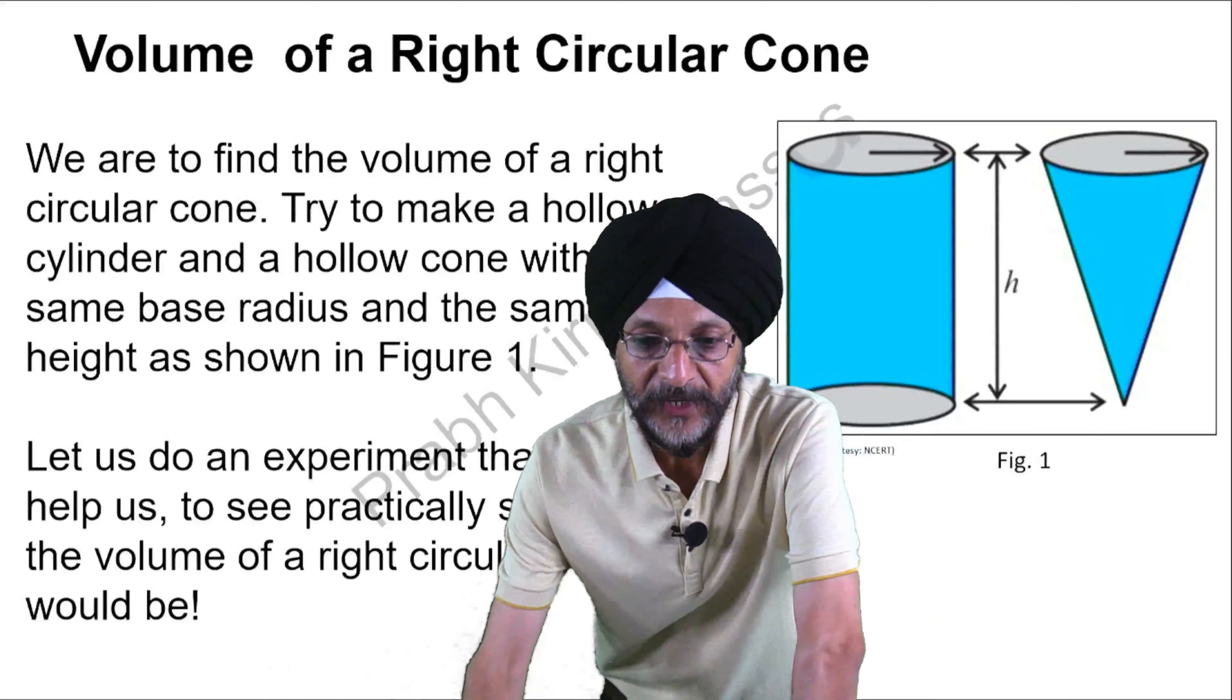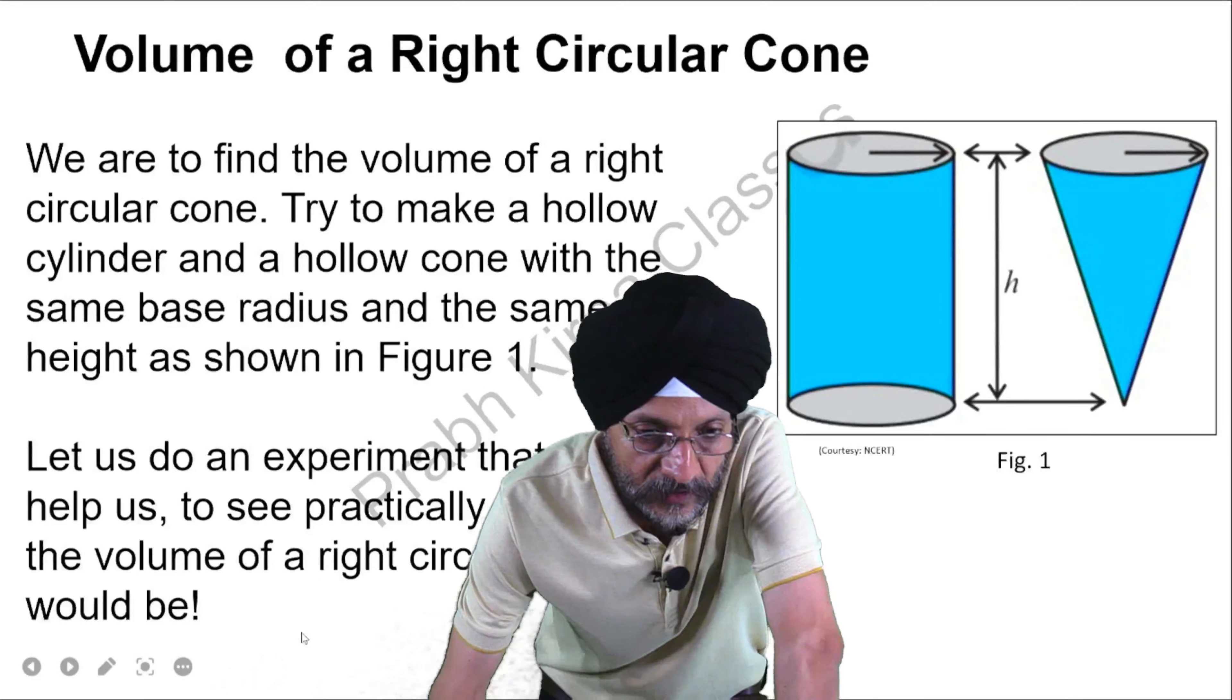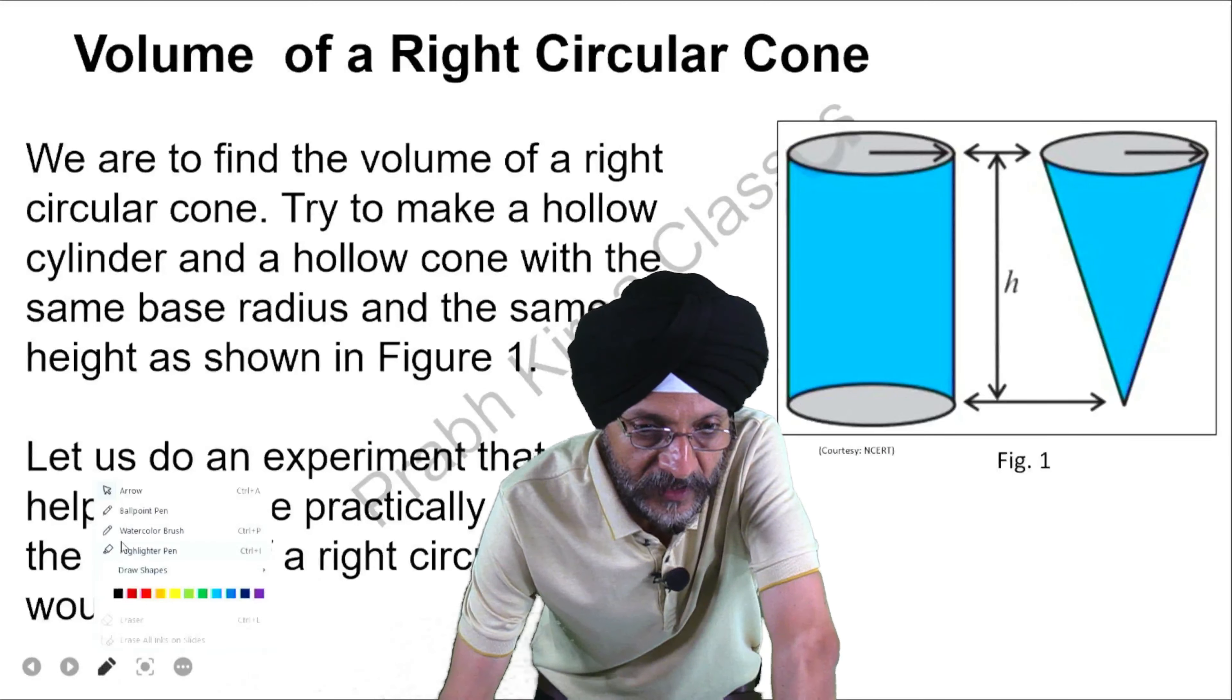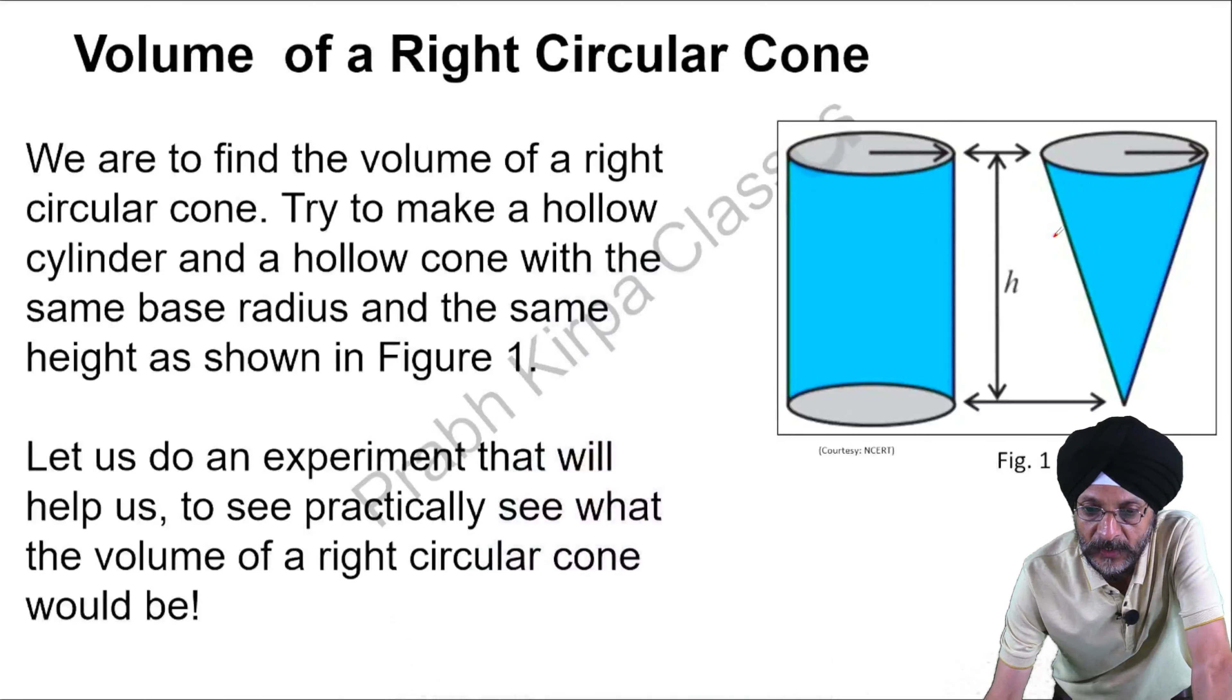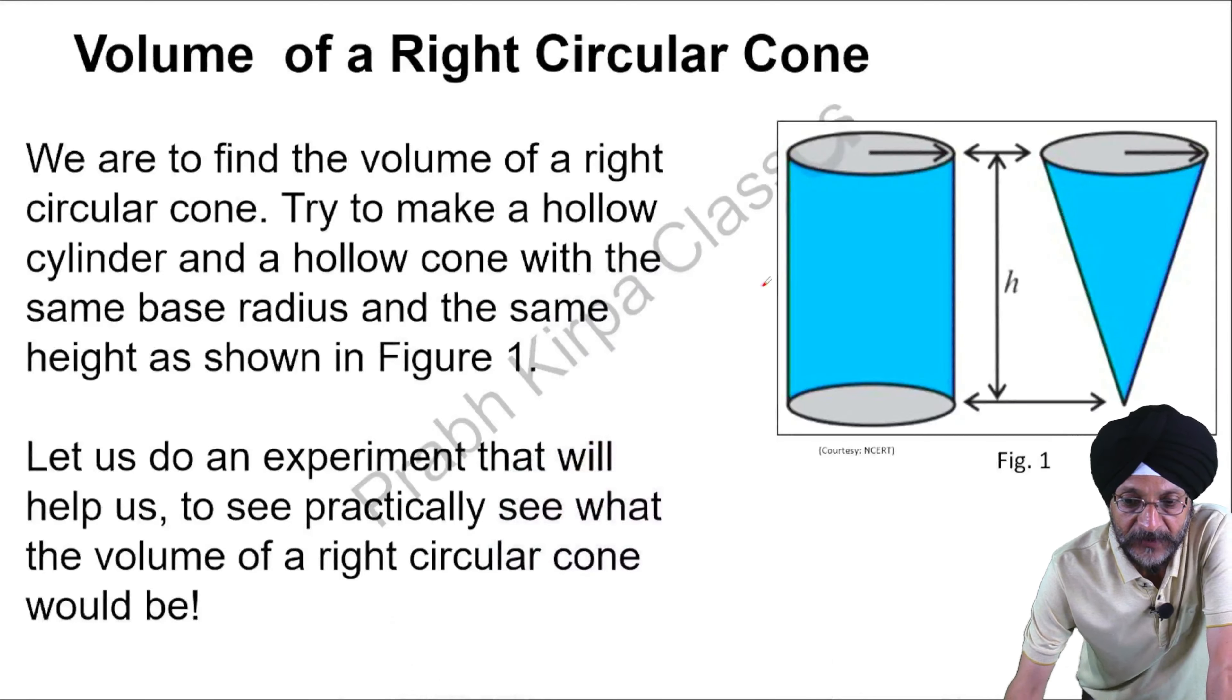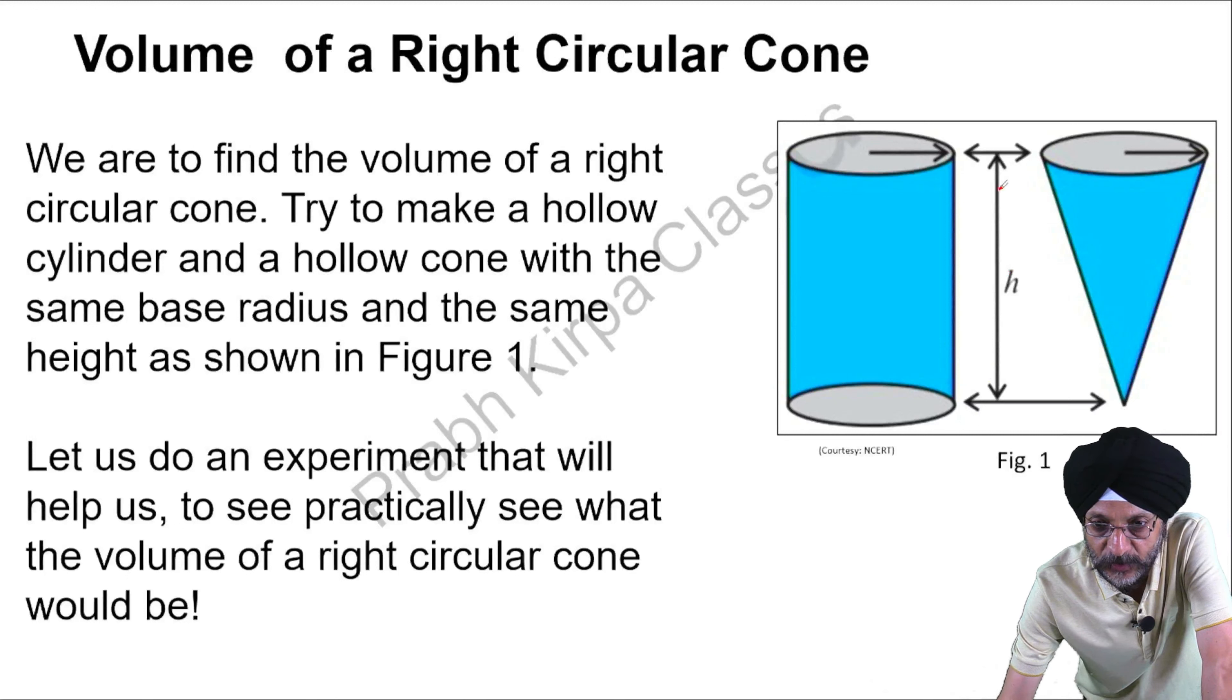For that purpose, we make a hollow cylinder as well as a hollow cone which have the same height. You can see here that this cylinder and this cone have the same height and the base radius of both, that is the cylinder as well as the cone, is the same. You can see here that this is the radius of the cylinder and this is the radius of the cone.